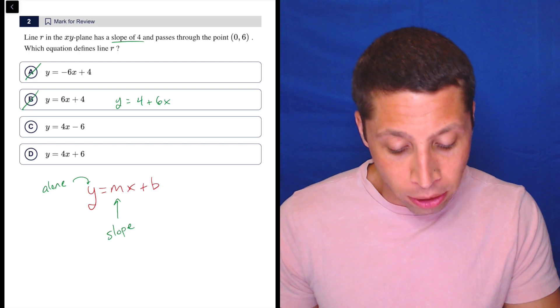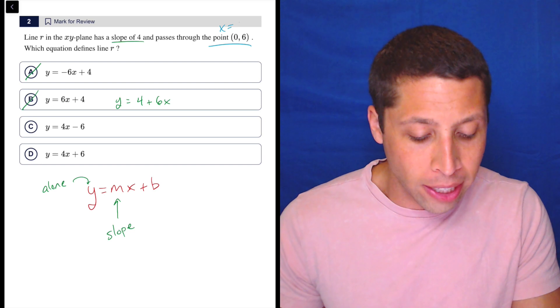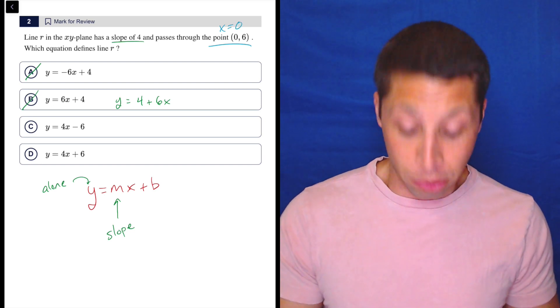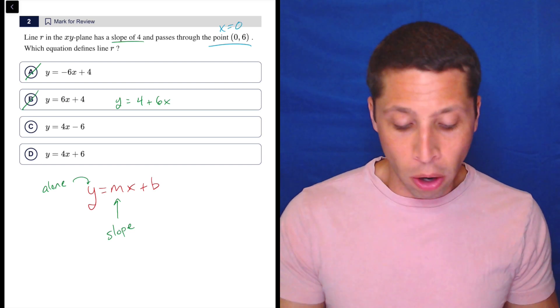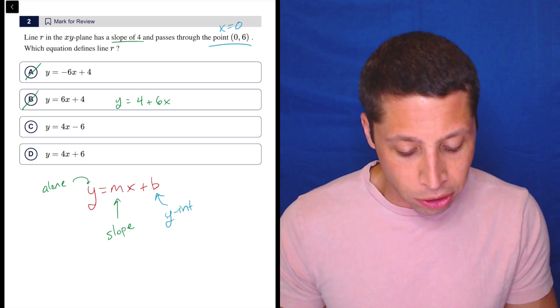Then for the final piece, they are telling us basically the y-intercept. You might not recognize it as that, but remember all y-intercepts have an x value of 0. So that's exactly what this is. We can also then see that that is the b portion of the line, the y-intercept.